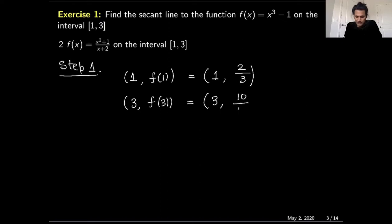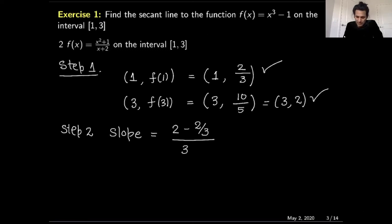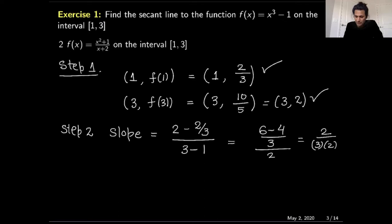When I plug in x=3, I get (9+1)/(3+2) = 10/5 = 2. So my two points are (1, 2/3) and (3, 2). To calculate the slope in step number two, I take the difference of y-values: 2 minus 2/3, which gives (6-4)/3 = 2/3, divided by the difference of x-values which is 3 minus 1 = 2. This simplifies to (2/3)/2 = 1/3.